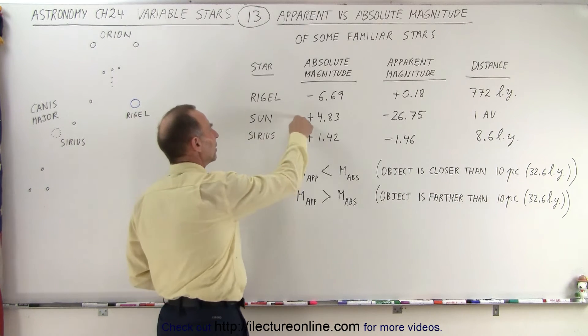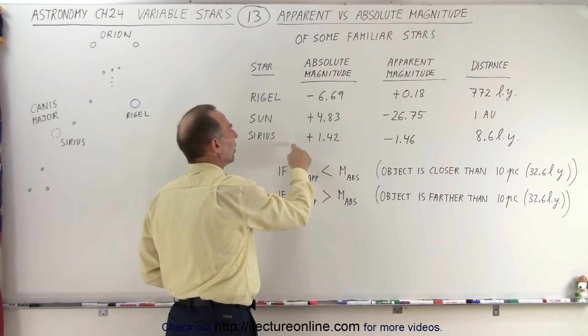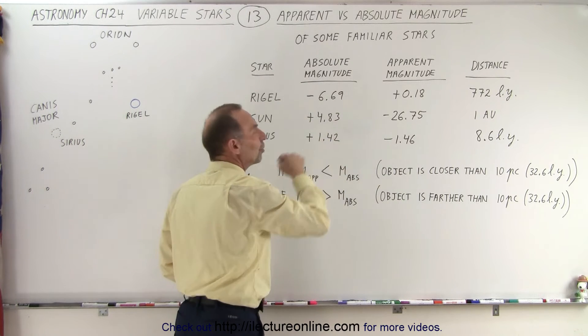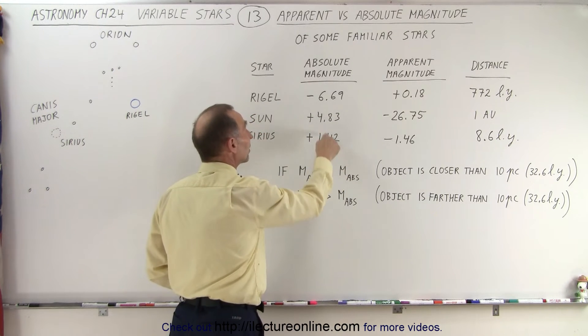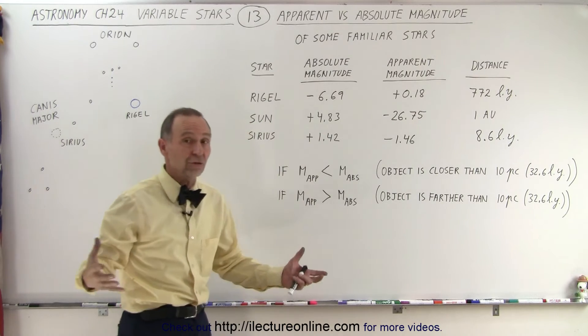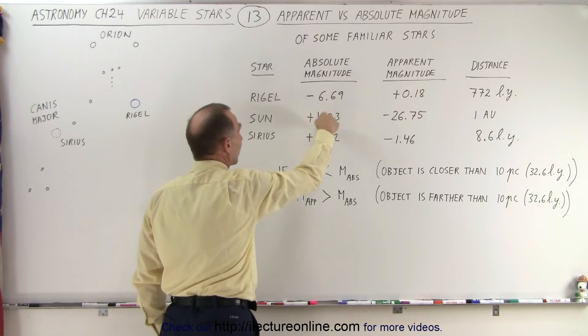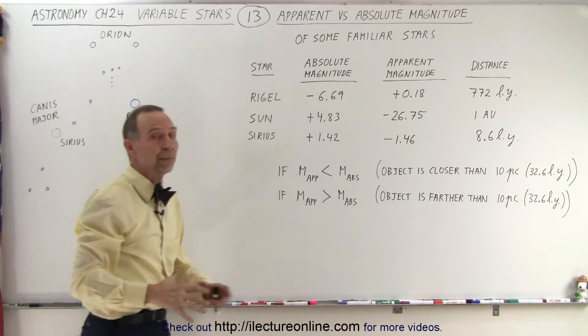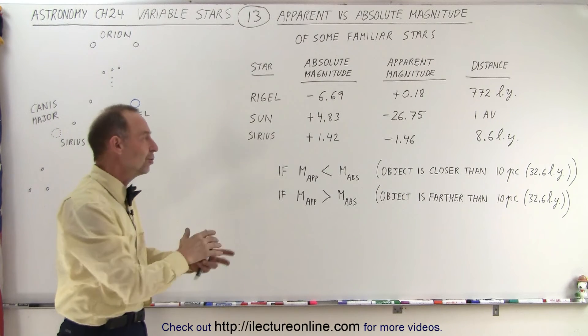Although we can compare these two, Sirius and the sun, notice the absolute magnitude, Sirius is brighter than the sun. That means it's a brighter star, period. And Rigel is much brighter than both of these. That's because Rigel, by far, outshines the other two stars.